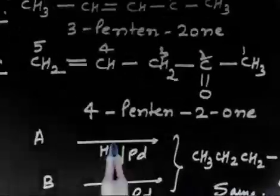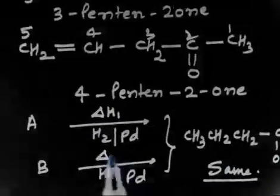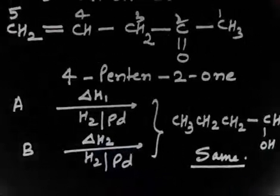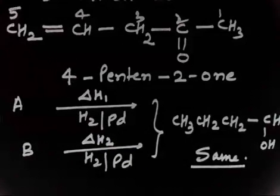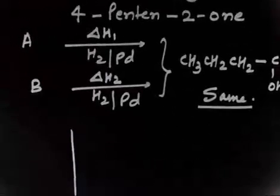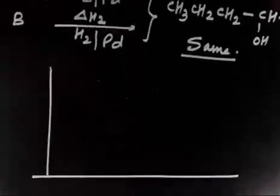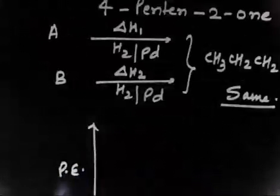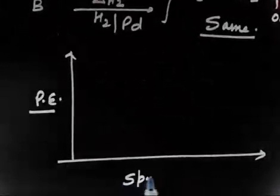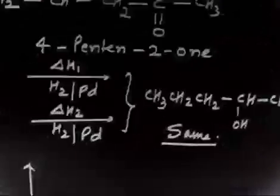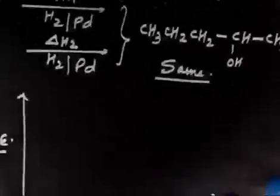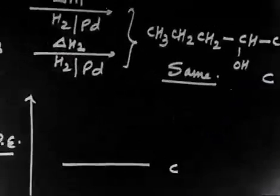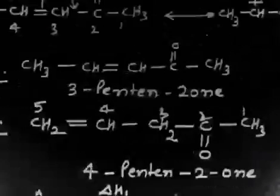Let us call the heat of hydrogenation of A as ΔH1 and of B as ΔH2. To compare them, let us draw a potential energy diagram with potential energy on the y-axis and species on the x-axis. Since both give the same final product C, the potential energy of the final product is the same reference point for both.